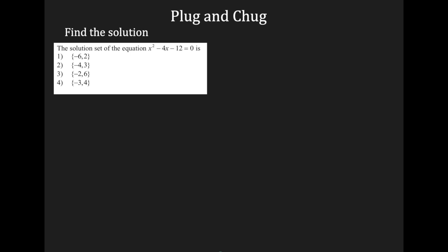Let's take a look at another problem. Notice in this example it says the solution. If you see the word solution and you're given an equation — right here it says equation, and we know it's an equation because of the equal sign — and it's multiple choice, you can use plug and chug. I'll write my equation: x squared minus 4x minus 12 equals 0. For this one I'm going to use the calculator. In your answer choices, notice there are curly brackets and you have two values. I have negative 6 comma 2 — your answer is both of them, so we need to plug in both numbers.